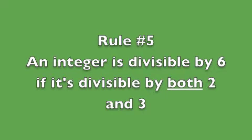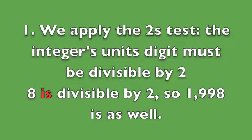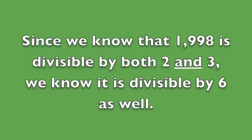Rule number 5: an integer is divisible by 6 if it is divisible by both 2 and 3. So how do we test if an integer is divisible by 6? Take 1,998. First, we apply the 2s test: the integer's unit's digit must be divisible by 2. In 1,998, 8 is divisible by 2, so 1,998 is as well. Next, we apply the 3s test: the sum of the integer's digits must be divisible by 3. 1 plus 9 plus 9 plus 8 is 27, and 27 is divisible by 3, so 1,998 is as well. Since 1,998 is divisible by both 2 and 3, we know it is divisible by 6.